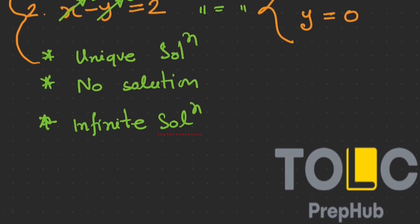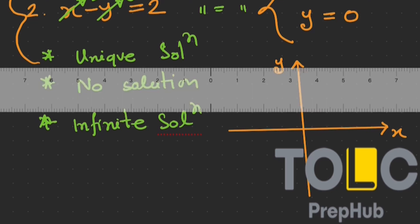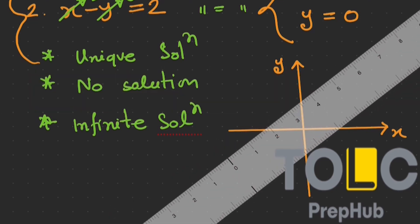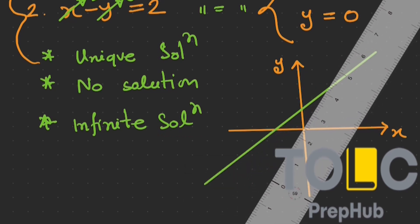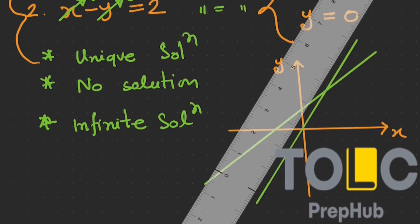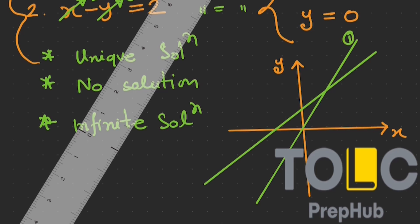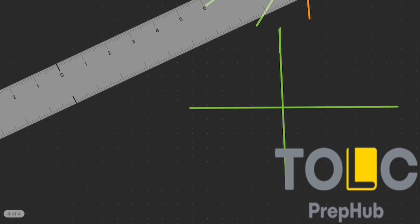For better understanding, we can draw a graph. Let's say this is a coordinate system with x and y axes. If two equations — let's call them equation number one and equation number two — intersect at a single point with values x and y, this kind of system, where the lines intersect each other, must have a unique or consistent solution, and both equations are valid at that point.